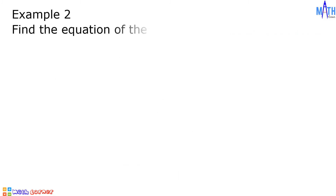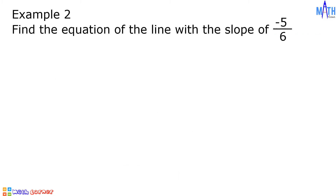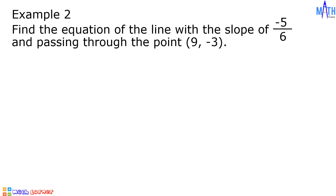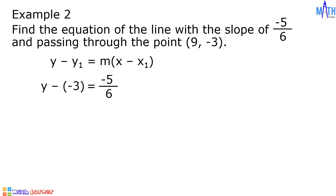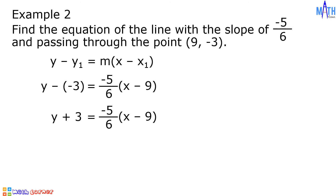Example number 2: let us find the equation of the line with the slope of negative 5 over 6 and passing through the point (9, negative 3). Let us substitute the given values in the point-slope form. y minus y sub 1 becomes y minus negative 3 equals m, which is negative 5 over 6, times quantity x minus x sub 1, which becomes x minus 9. Since y minus negative 3 is equal to y plus 3, then we have y plus 3 equals negative 5 over 6 times quantity x minus 9.